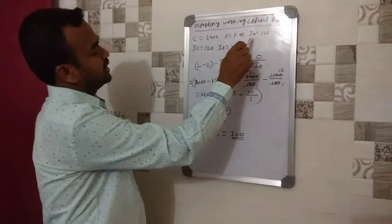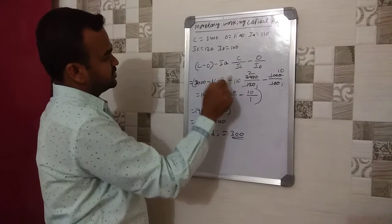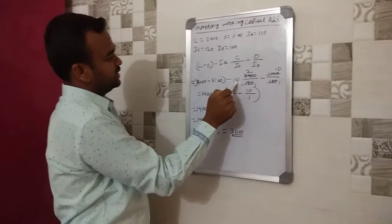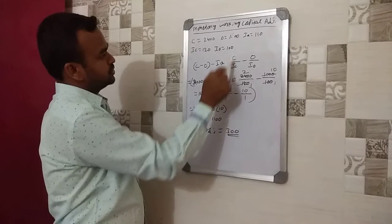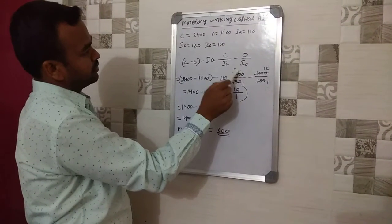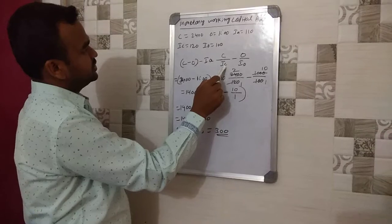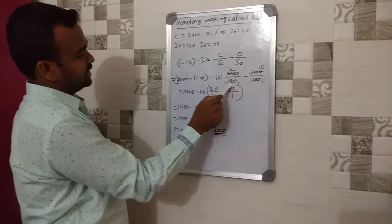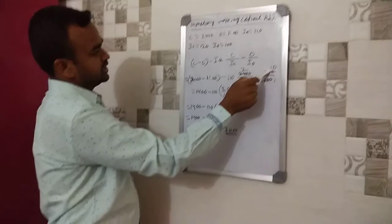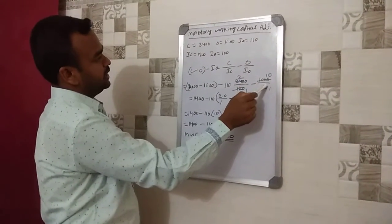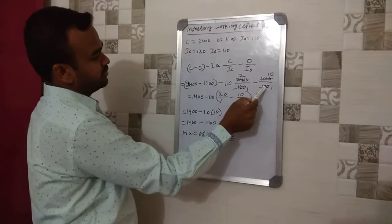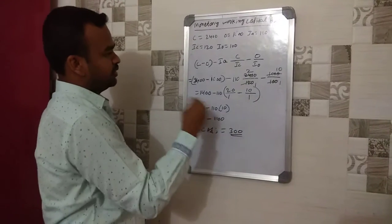IA means average index, that is 110, multiplied by C which is closing working capital 2400, divided by IC which is closing index 120, minus O which is opening working capital 1000, divided by IO which is opening index 100 given in the problem.